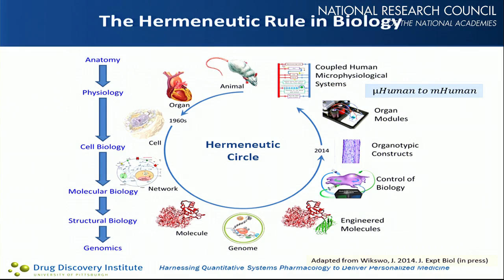This is the hermeneutic rule in biology. You can start at the top of this circle with a whole organism, then down to organs, cells, networks within cells, individual molecules, the genome, and engineered molecules to either manipulate or measure activities. Going back a number of years, we can start controlling biology. That's led to organotypic constructs and organ modules, and finally a coupled human microphysiology system. Most of the systems people are working on range from a microhuman to a millihuman in scale.